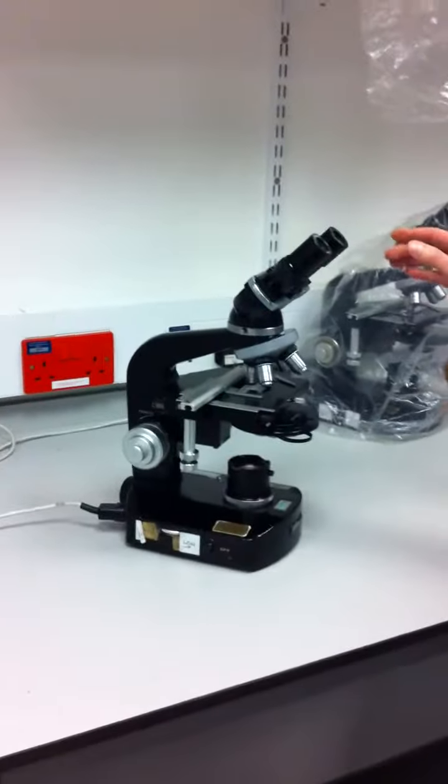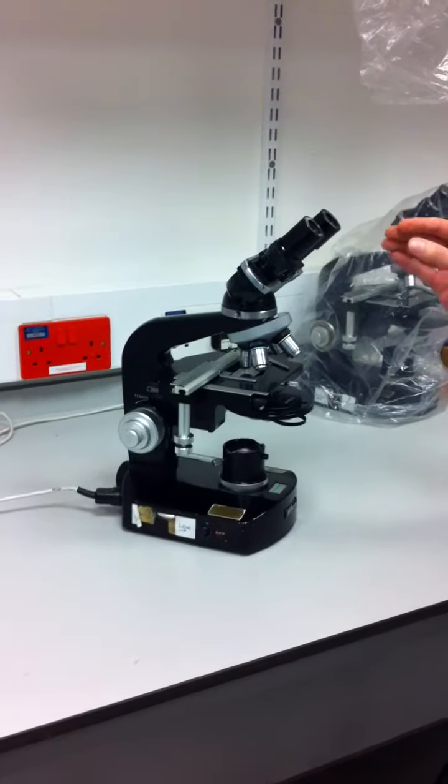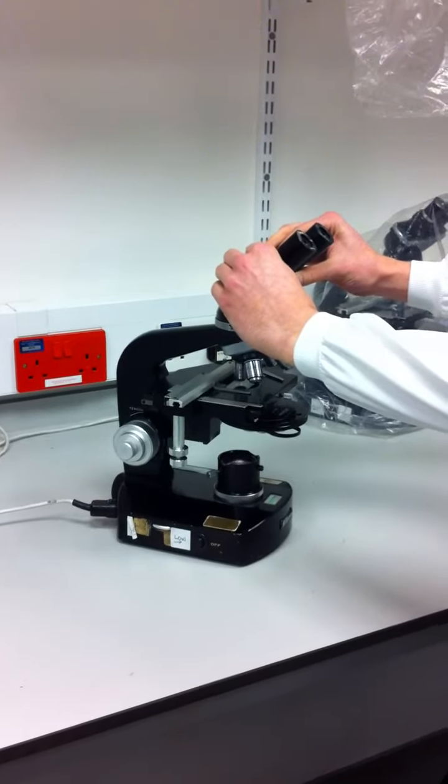To start off with, we'll start from the top. We've got the eyepieces. This is a binocular microscope, so there are two eyepieces. You can adjust them, moving them forwards and backwards, putting them closer together.